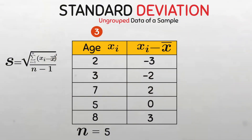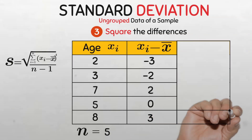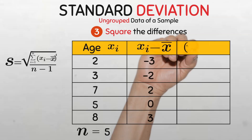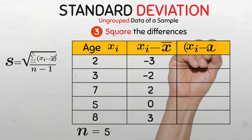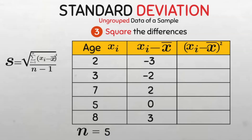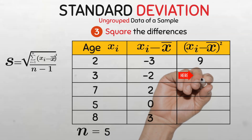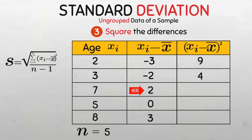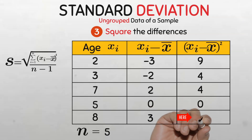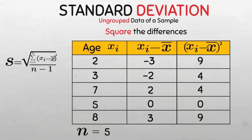In step three, we find the square of the differences — that is the exponent of 2 we see in the formula. We add another column to the table labelled (X sub i minus X bar) squared. For the first: negative 3 squared equals negative 3 times negative 3, which is 9. Next: negative 2 squared equals 4. For the third: 2 times 2 is 4. Zero multiplied by itself is 0, and finally 3 squared is 9. So the squared deviations are 9, 4, 4, 0, and 9.